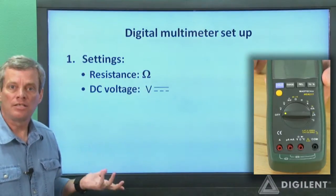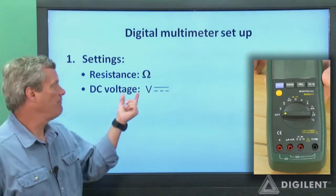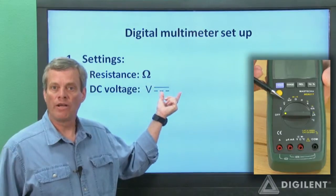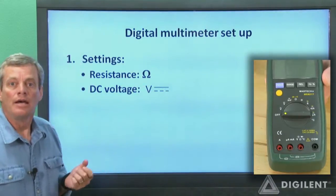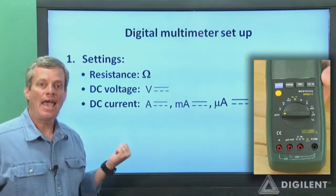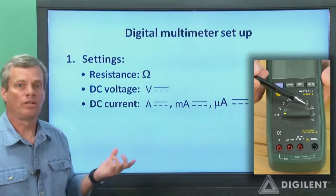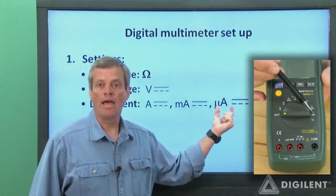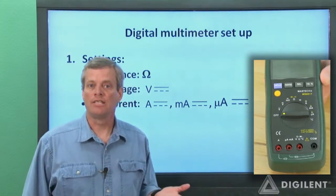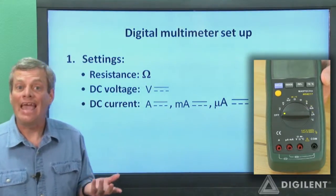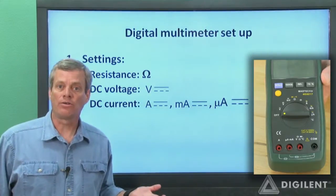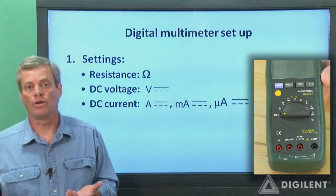To measure a constant voltage, move the dial to the V with a bar either over it or next to it. To measure a constant current, move the dial to the A with a bar over it or next to it. You may also have settings that are labeled as mA or μA. These allow you to change the sensitivity of your current measurement. The A setting is to measure fairly high currents, the other settings are used for smaller currents.